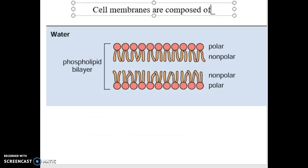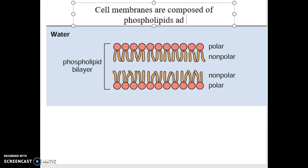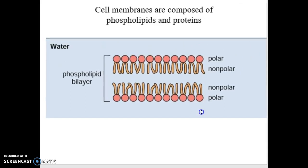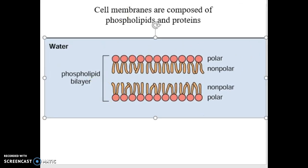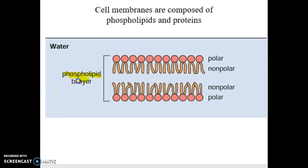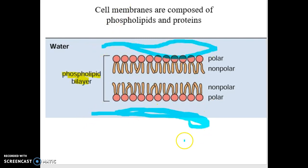Cell membranes are composed of phospholipids and proteins. This is a phospholipid bilayer — 'bi' refers to two. You have water outside of your cell and water inside the cell, and then the phospholipids make this barrier, this membrane. The heads of the phospholipids are polar, meaning they like water. The tails are non-polar, meaning this part of the phospholipid doesn't like water.